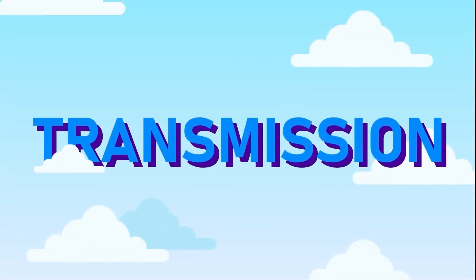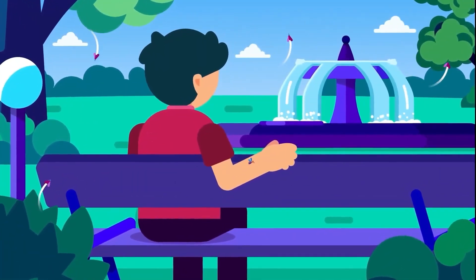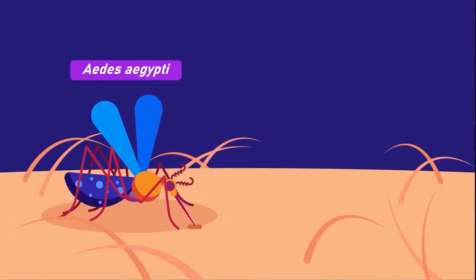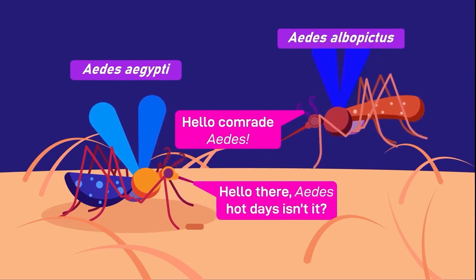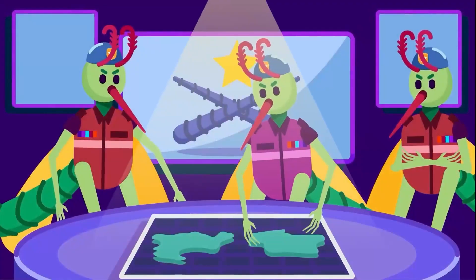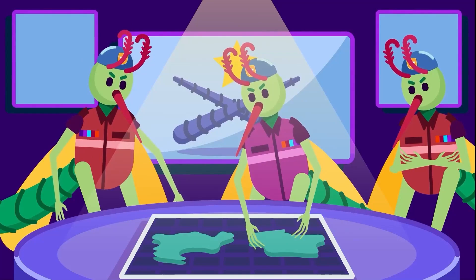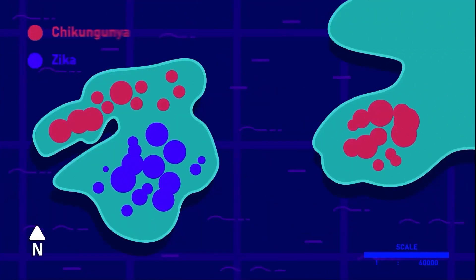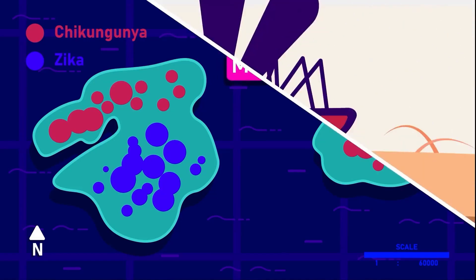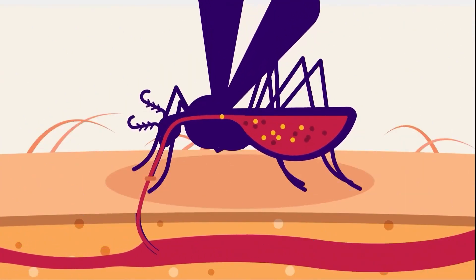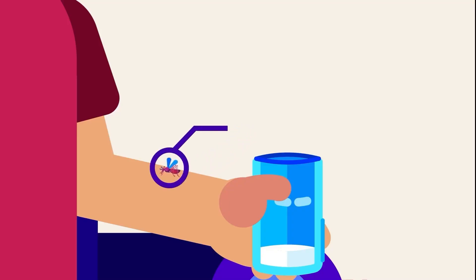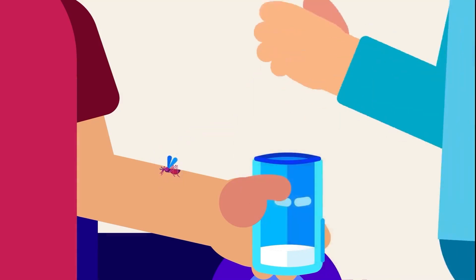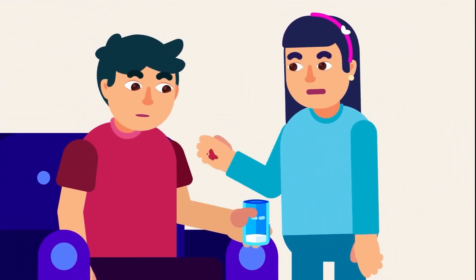The virus is spread via the bite of a mosquito, mostly by Aedes aegypti, and to a lesser extent by Aedes albopictus. Importantly, these very same mosquitoes are involved in the spread of other viral diseases, including chikungunya and Zika. The mosquito can become infectious when it bites an infected individual, then carries the Dengue virus and injects it into another individual during its next meal. Dengue doesn't spread directly from one patient to the next.